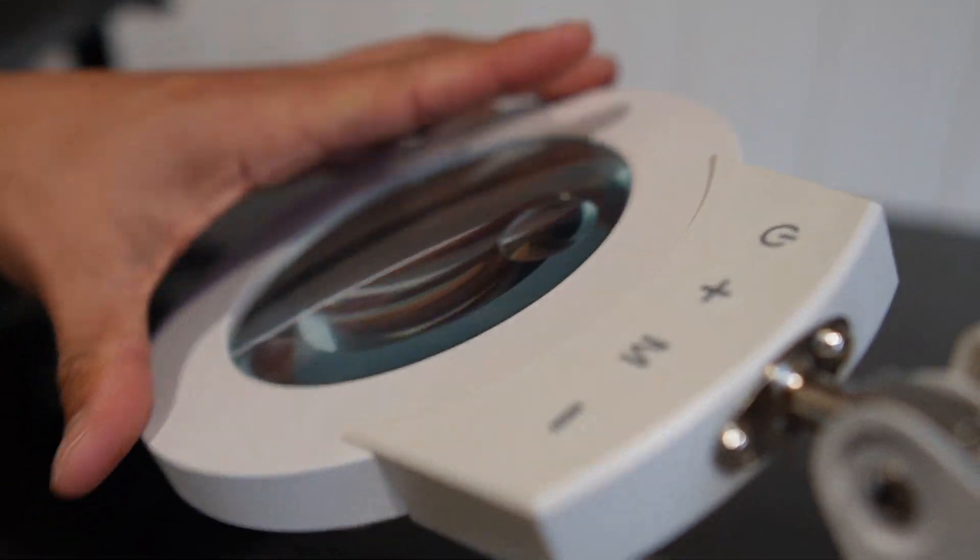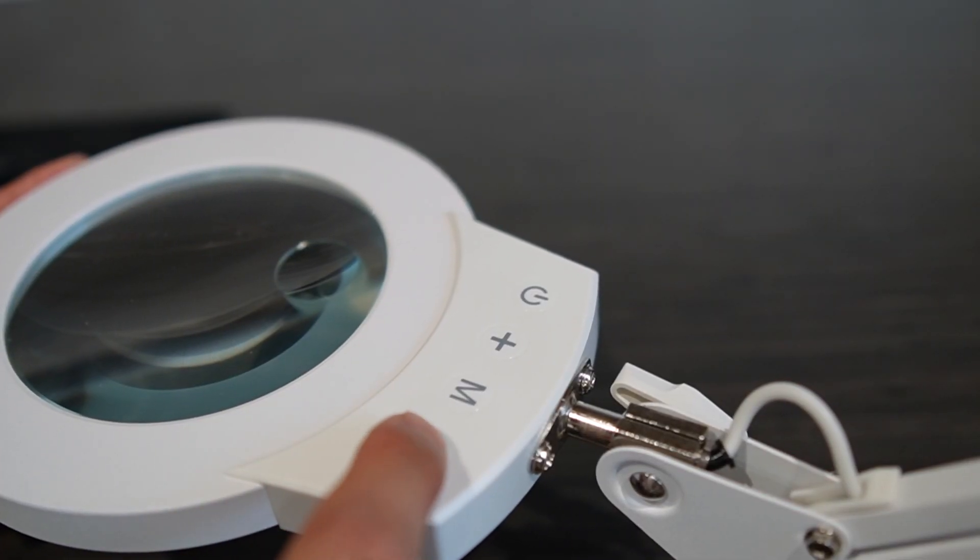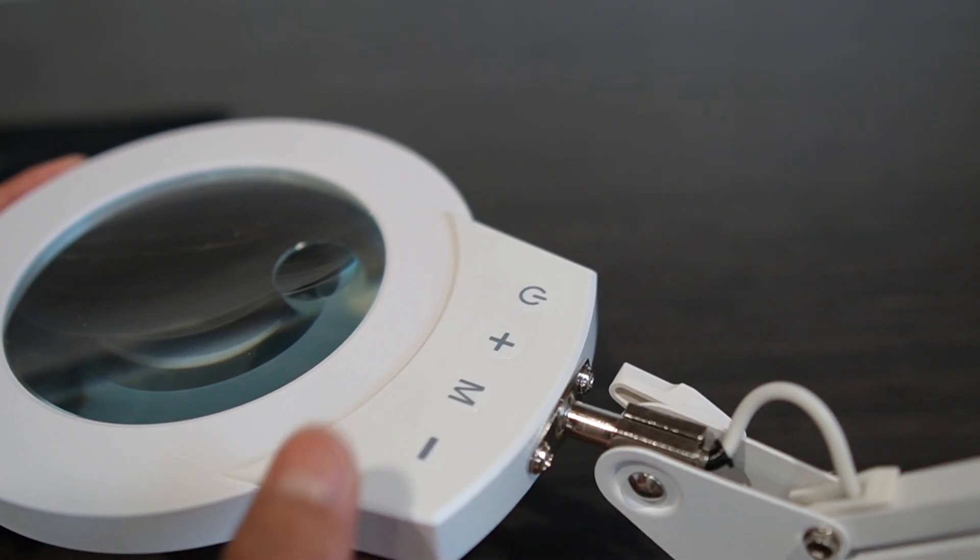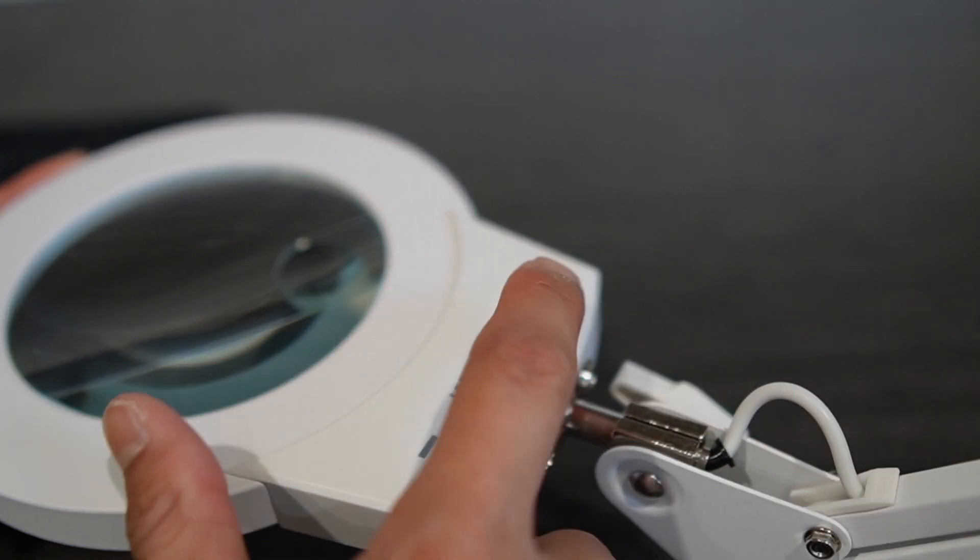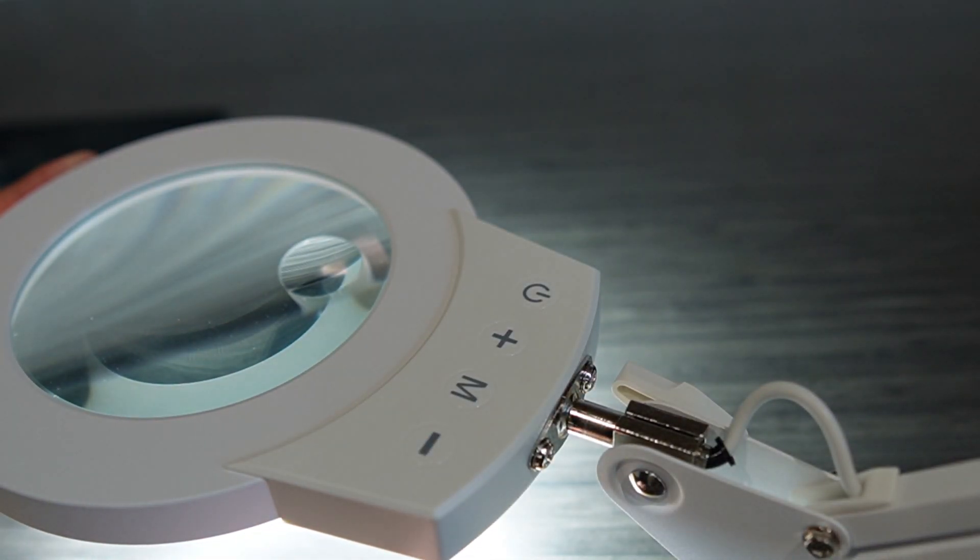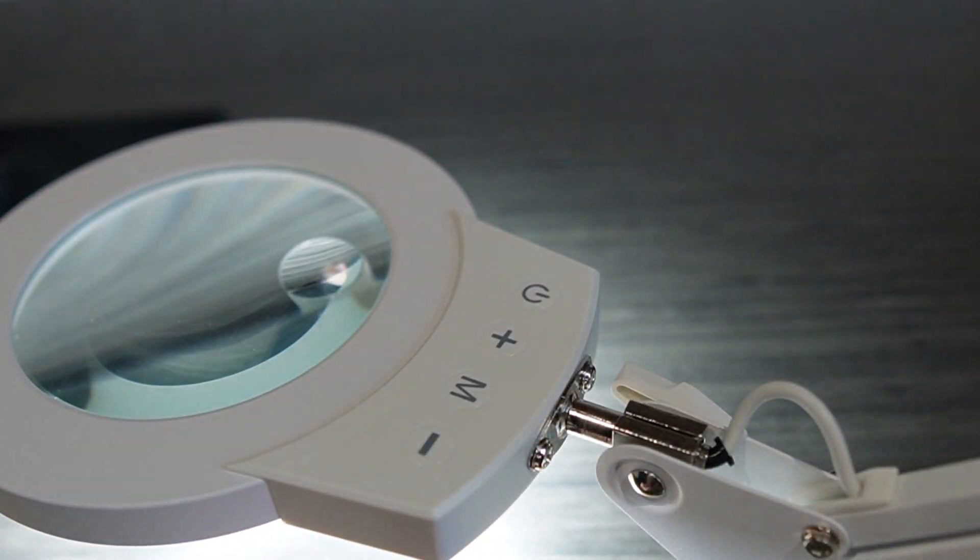On the top part, this is where we have all the controls. All these buttons are capacitive touch, so you don't have to click them, you just tap it and it turns on. I press the power button and this lights up. I press it again, it turns off.